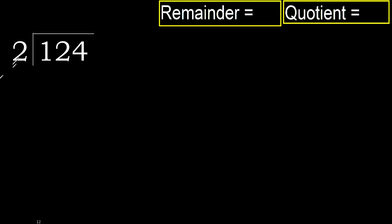124 divided by 2. 1 is less, therefore next. 12 is not less, therefore with 12: 2 multiplied by which number is nearest to 12,